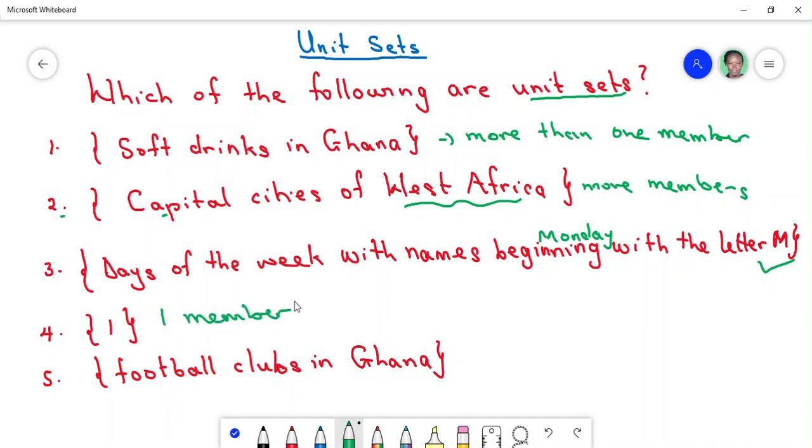So that makes it a unit set. Let's look at the fifth one: football clubs in Ghana. The question is, is it a unit set or not? So I wait for your responses in the comment section.